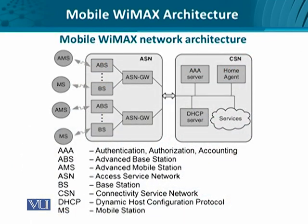Looking at the overall architecture starting from the leftmost side, we have the air interface or the user equipment — either mobile stations or advanced mobile stations. Then we have the access service network, which is the access side of the network architecture. Here we have either base stations or advanced base stations. This difference in terminology implies better modulation and multiplexing schemes, revised packet structure, and packet handling and software components which handle these packets and traffic.